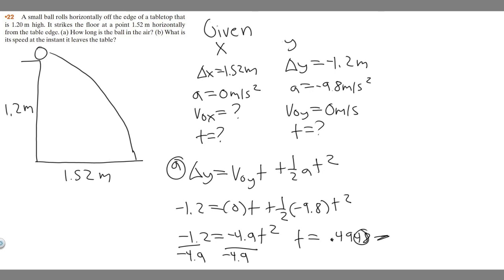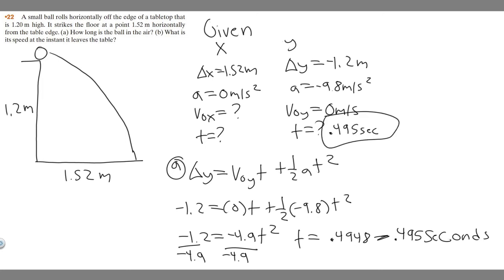Rounding, t equals 0.495 seconds. Since we're using meters and meters per second, the time unit is seconds. So 0.495 seconds is the answer to Part A — that's how long the ball is in the air.